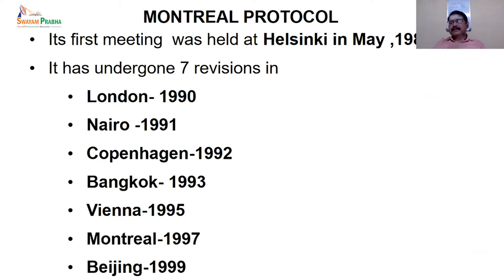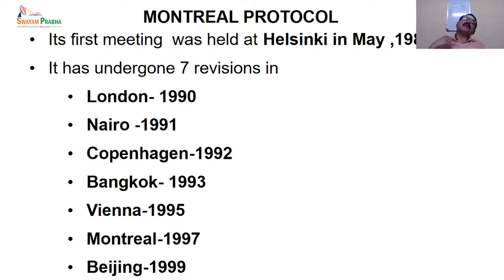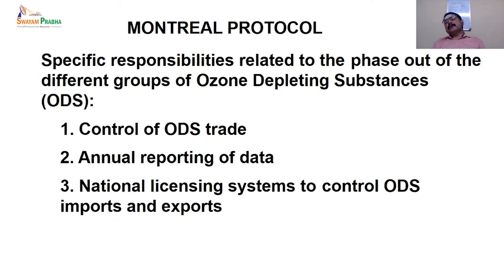The Montreal Protocol meeting was first held in Helsinki in May 1989 and underwent seven revisions at London, Nairobi, Copenhagen, Bangkok, Vienna, Montreal, and Beijing. They were taking a list of the major chlorofluorocarbons used in each country and planning how to phase them out. CFCs have a lot of industrial applications — used as a coolant in refrigerators, air conditioners, and in flame retardants, paints, and pesticide manufacture. So they wanted to totally phase out CFCs.